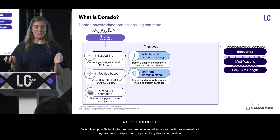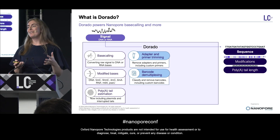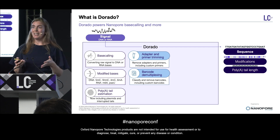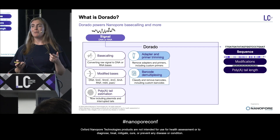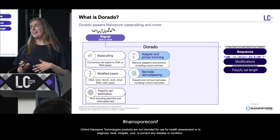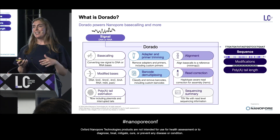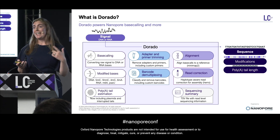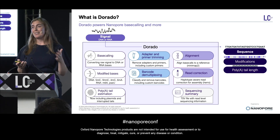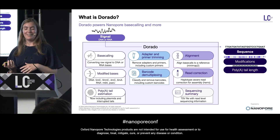We have additional tools to tidy up your signal and get it ready for answering your biological questions. We have adapter and primer trimming, barcode demultiplexing and trimming, and these can be customized to your needs. We are also adding more secondary analysis tooling into Dorado. We've added alignment previously, and today we have a new tool for assembly read correction, which I'll be going into in more detail in this talk.